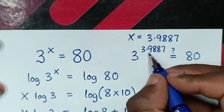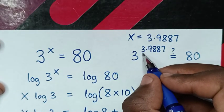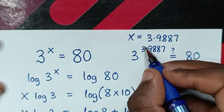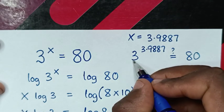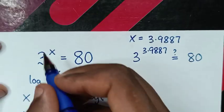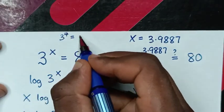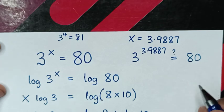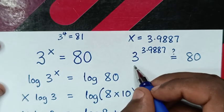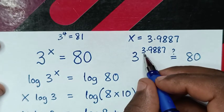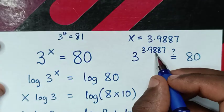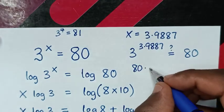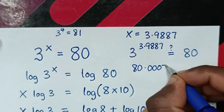Now just for this power, when we approximate to 4, we know that 3 power of 4 is equal to 81, whereas it is approximately equal to this. So when we substitute into the calculator, 3 power of 3.9887, it is 80.0007.